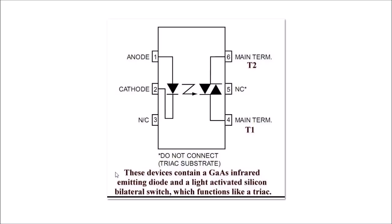Quoting the manufacturer's literature, these devices contain a gallium arsenide infrared emitter diode and a light activated silicon bilateral switch which functions like a TRIAC. I repeat, which functions like a TRIAC. We've had these discussions before—is it a DIAC or whatever. I'm going by what the literature says: we have a photo TRIAC.